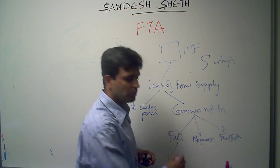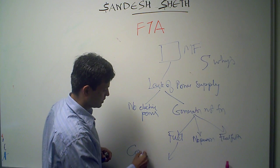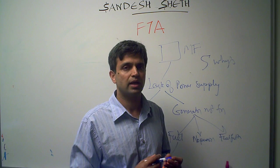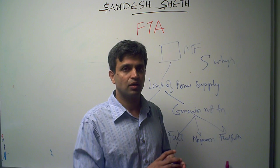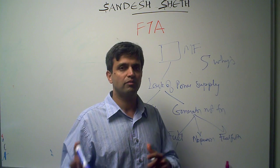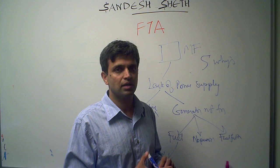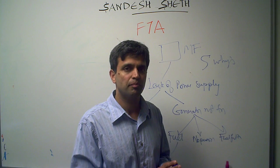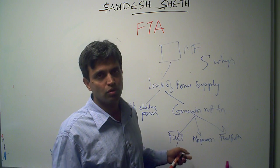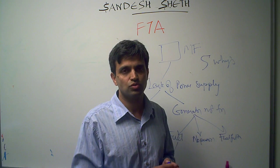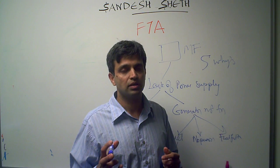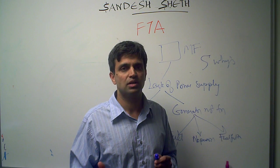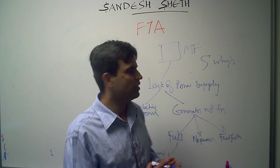For each root cause we determine what is the countermeasure and what we need to do. For example, we may need to train a person, have the policies and processes in place as to how a person will be trained, what the frequency should be, and when we should rehearse them. And if there was no backup, what amount of resources or money will be spent in eliminating it. So the countermeasures give us a price indication as to how much it would cost to prevent that particular failure mode.